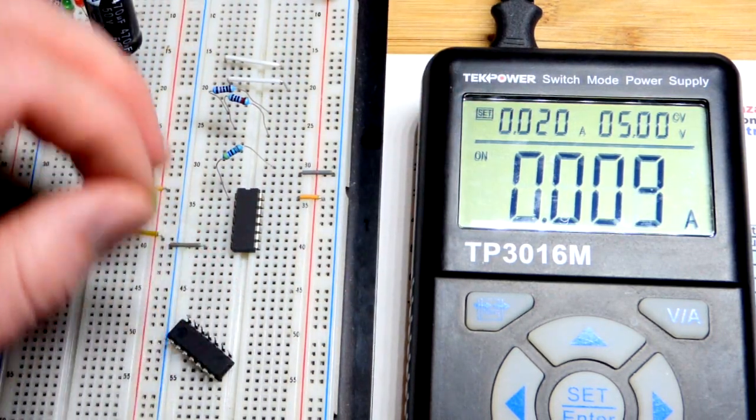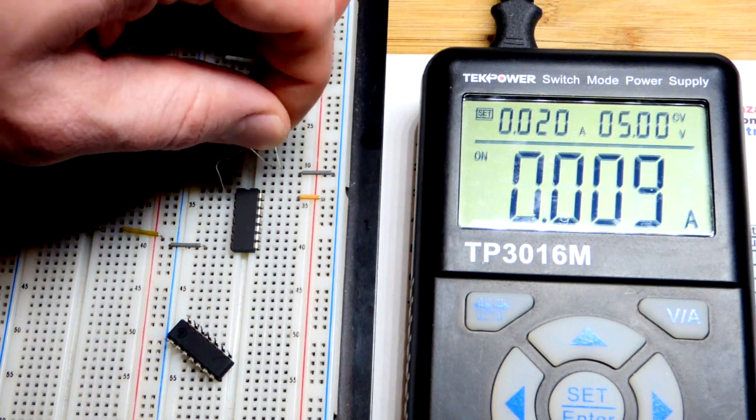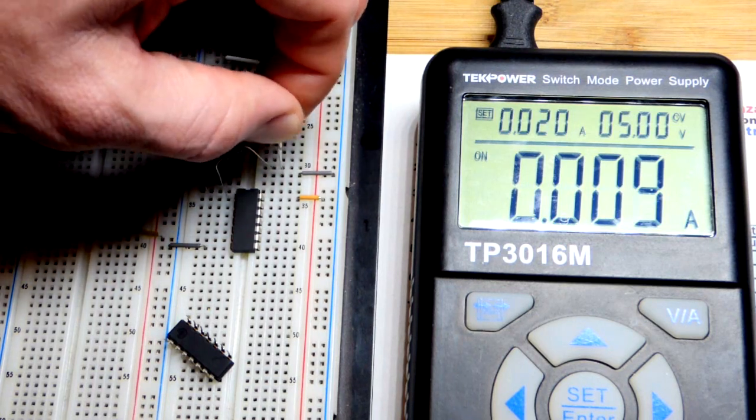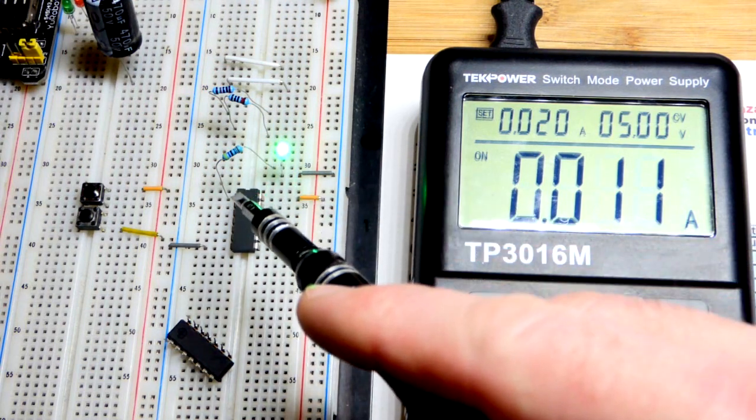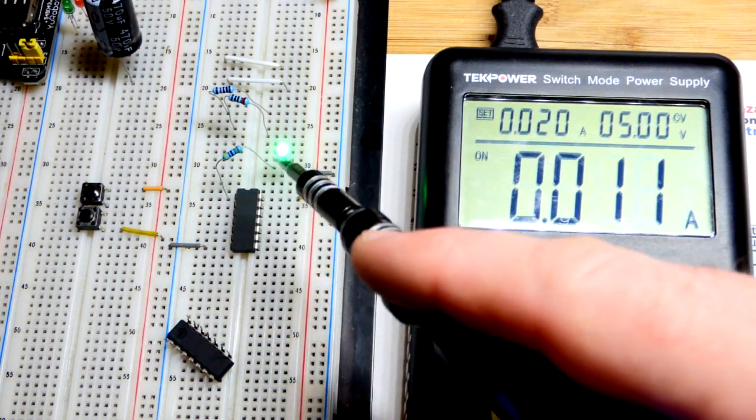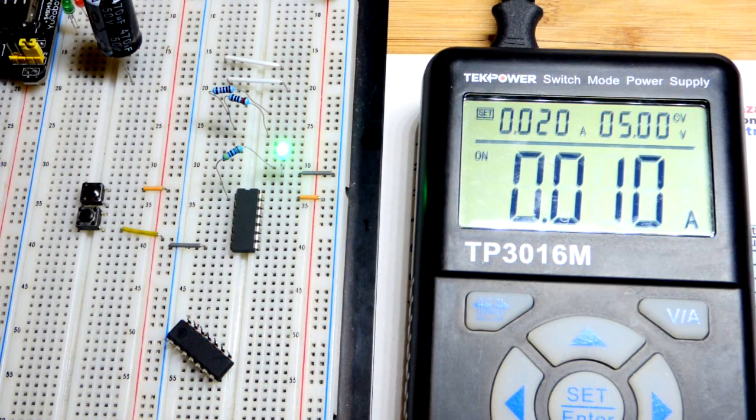There we go. 470 ohm resistor. We're only dealing with five volts - that's all the low-power Schottky can really handle for the most part. So I'm going to put the long lead of the LED to the resistor, short lead of the LED to that jumper there, and the NOR gate has a high output.